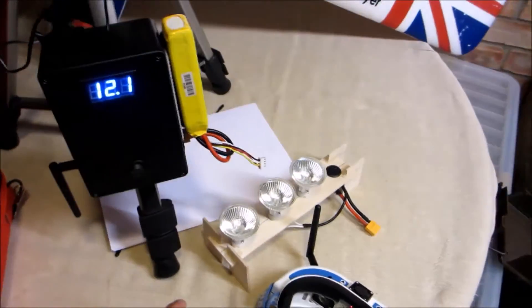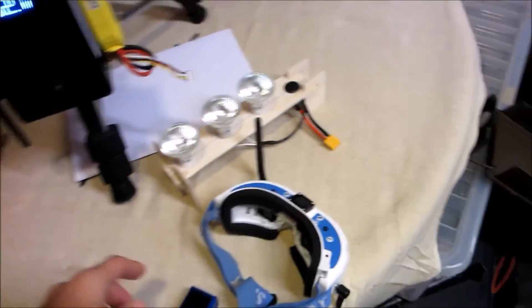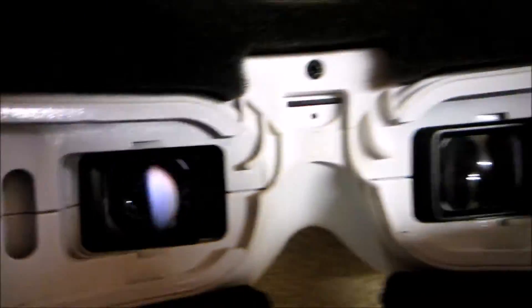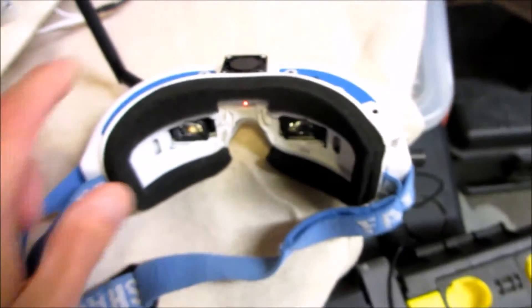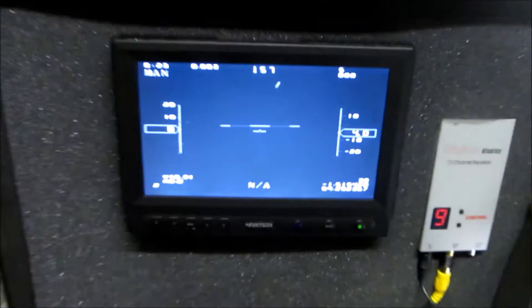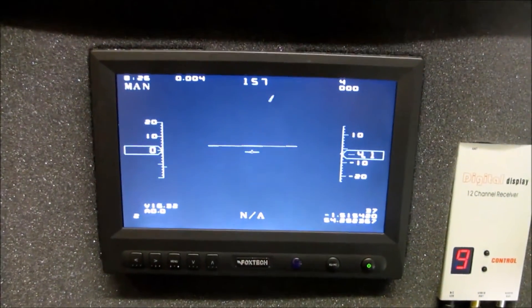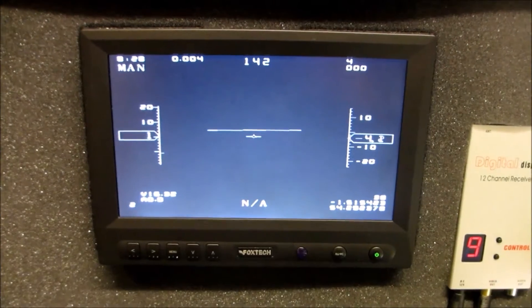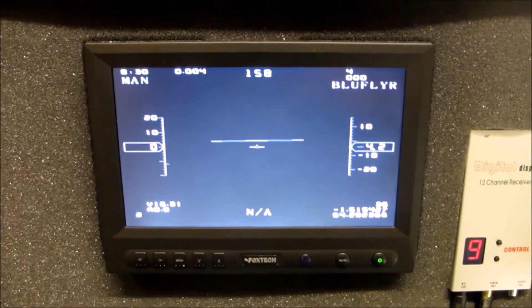This then transmits 5.8 to my goggles and you can see the OSD just about. I'm using my goggles to record the OSD so that I can show you how to set up the MyFlyDream autopilot for a Minitalon.